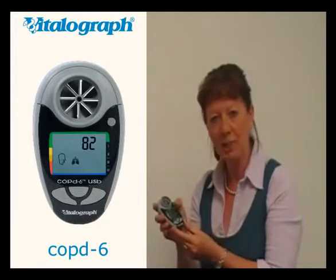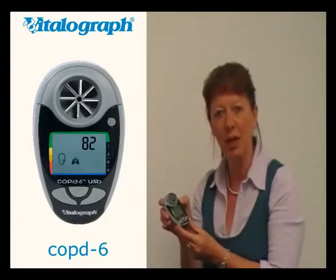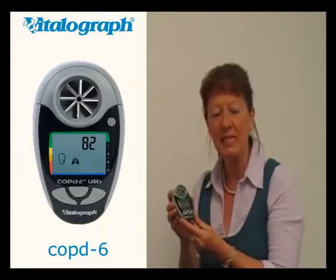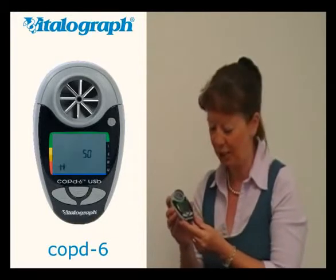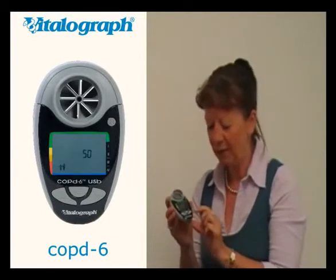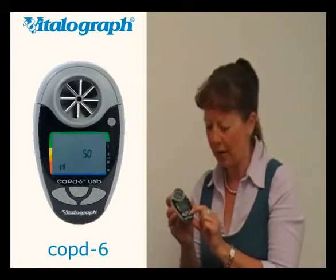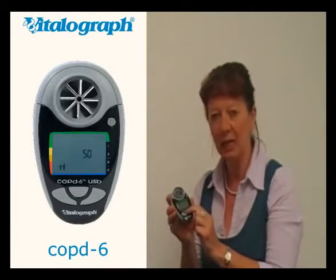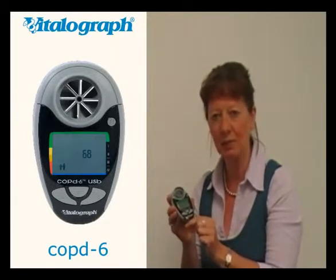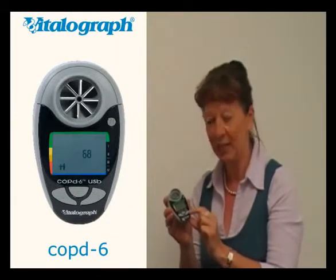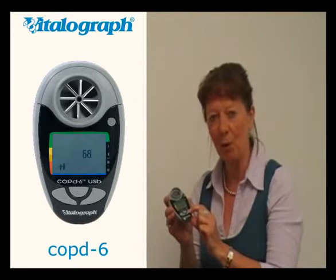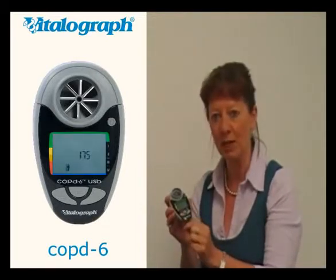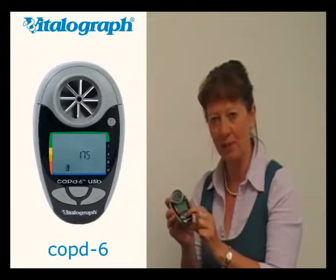Simply turn the device on using the circular button. This gives the facility to enter the subject age. Select the up or down arrows until the correct age appears and press the enter button. Again, select up or down to give the correct height of your subject and press the enter button.